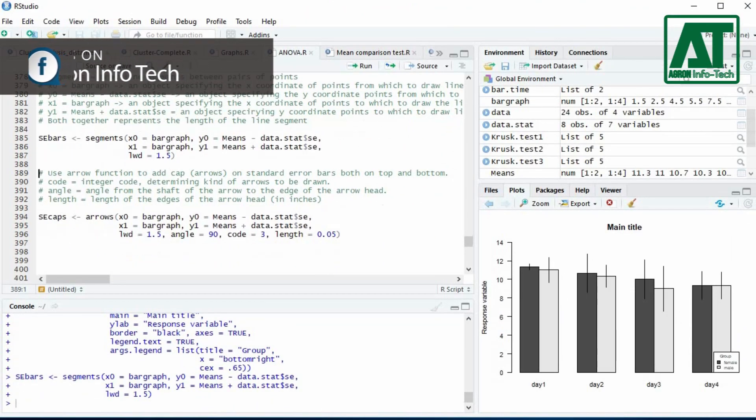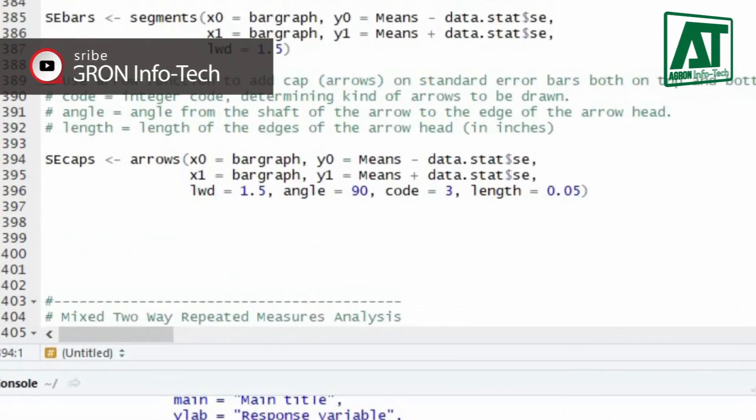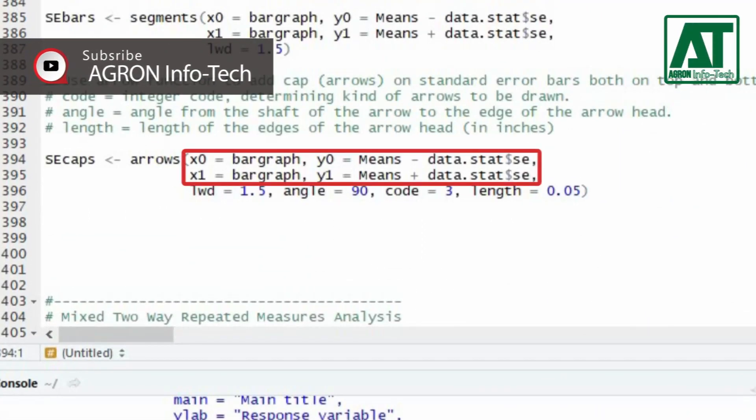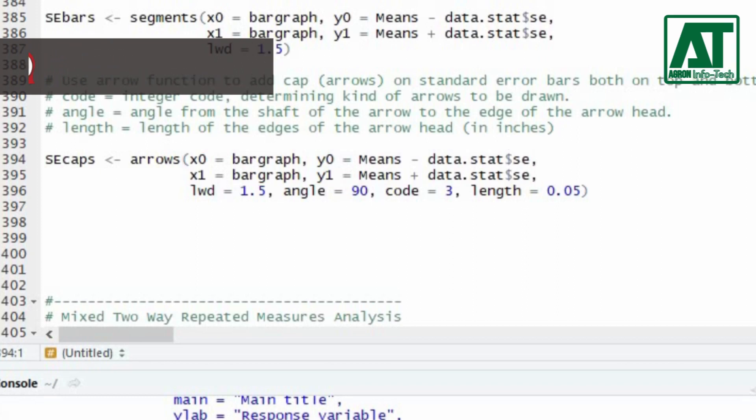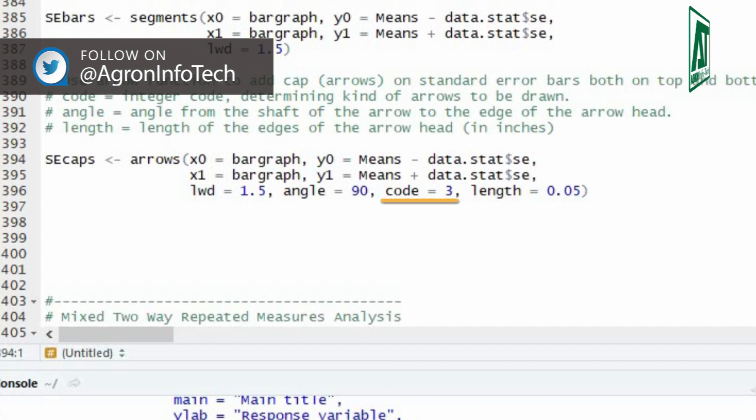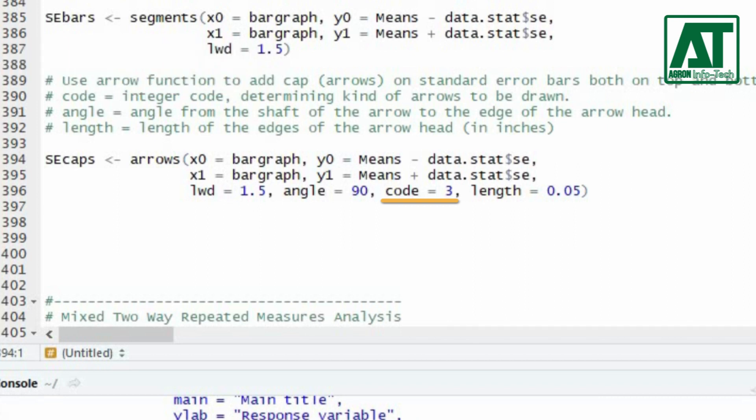Now use the arrows function to add caps to the line segments or error bars. Use same arguments as previously used in segment function. Angle specifies the angle of the arrows or caps from the shaft of the line segments. Code specifies which type of arrows to be used in line segments. 3 value indicates that arrows to be drawn on both upper and lower end of the line segment. Length argument represents the length of the edges of the arrow heads.